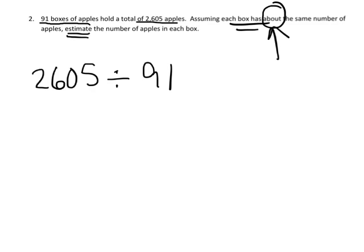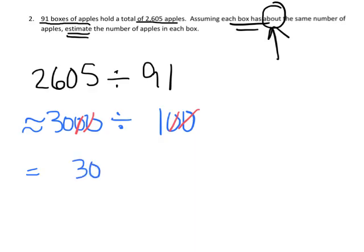And I would probably begin by estimating and rounding 91. Well, one way to do it is round that to 100. Make this 2,600. I could round that up to 3,000. Cross off two 0s, cross off two 0s. And now we have 30 divided by 1, which is 30. So one estimation could be an estimation of 30, 30 apples in each box.